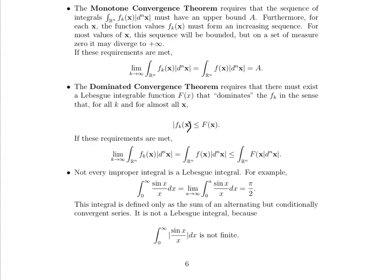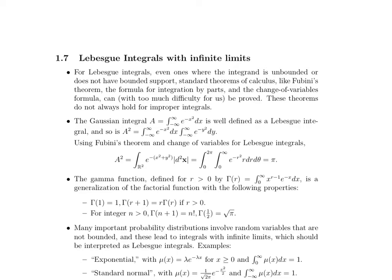It's important to note that not every single improper integral, as you're toying around with these, is a Lebesgue integral. For instance, here we have an example of an improper integral. This integral is defined only as the sum of an alternating but conditionally convergent series, and it's not a Lebesgue integral because when we take a look at the absolute value of sin x over x, when we take the integral of the absolute value of that, that is not finite. But when we allow it to alternate in sign, we take a look at positive area versus negative area, that is finite.